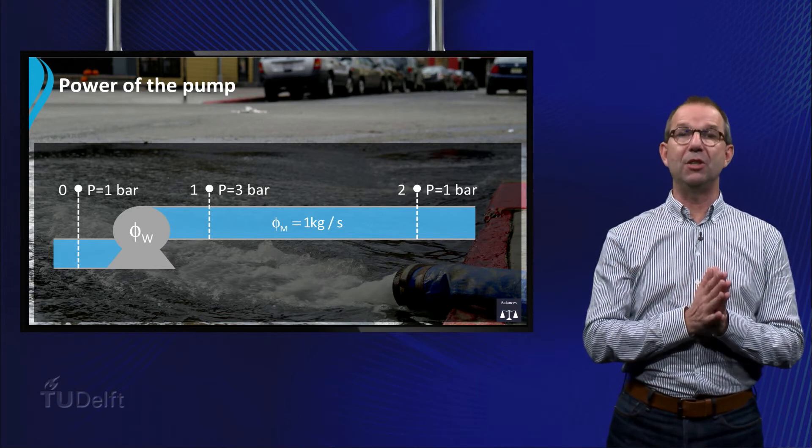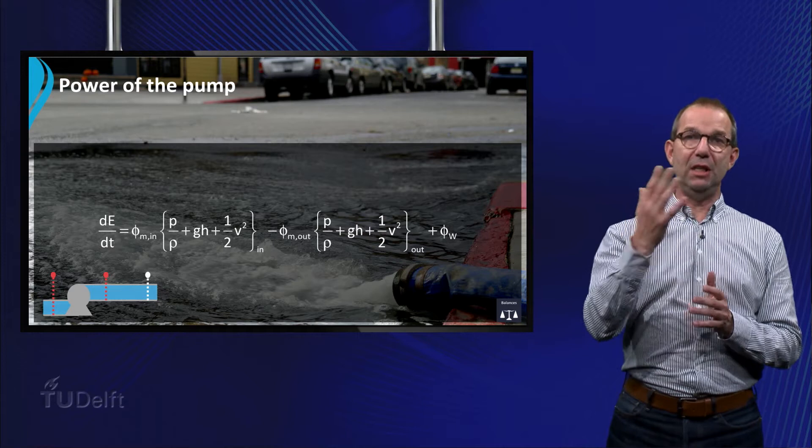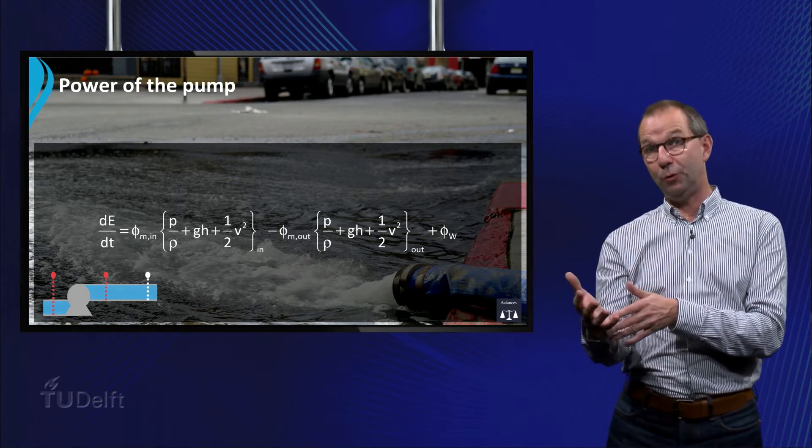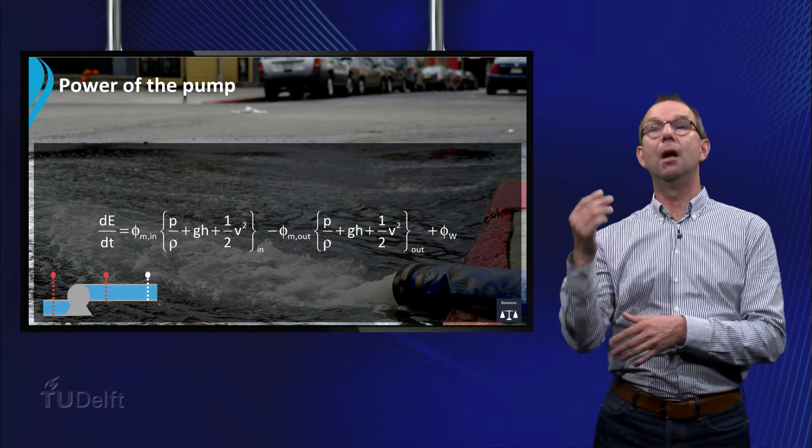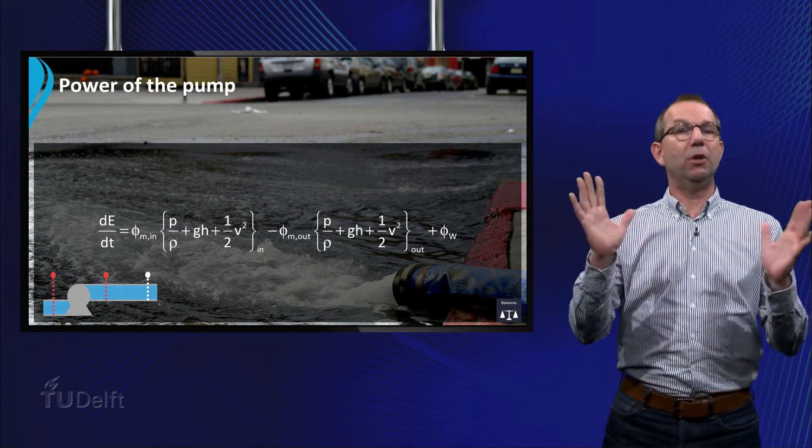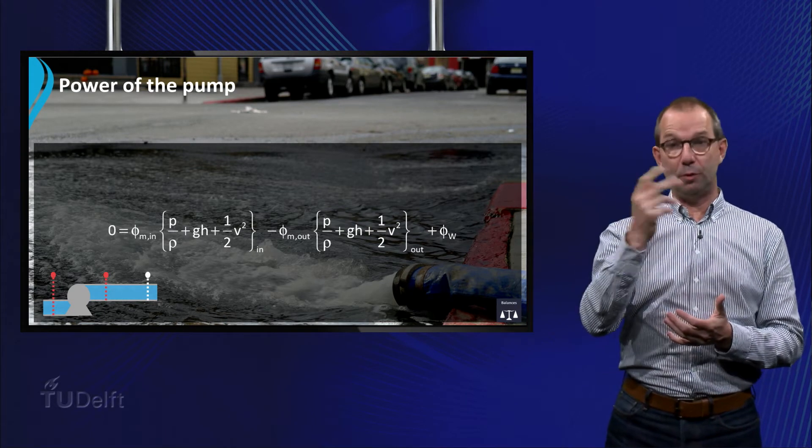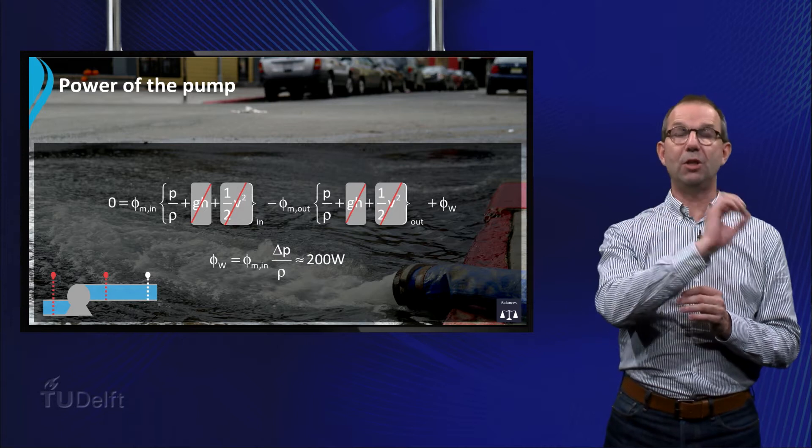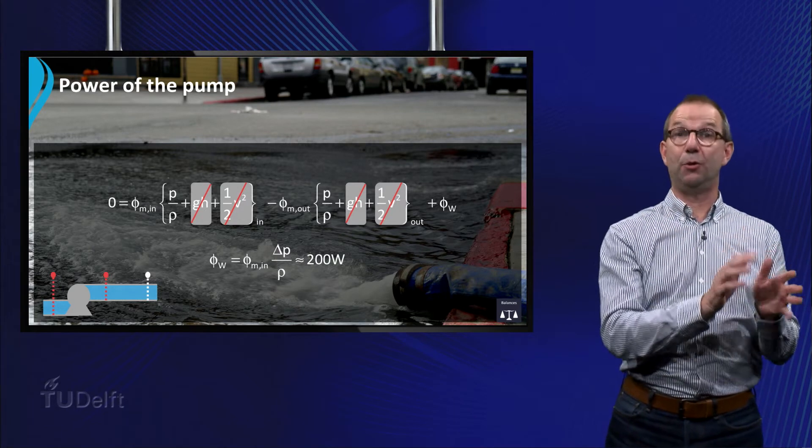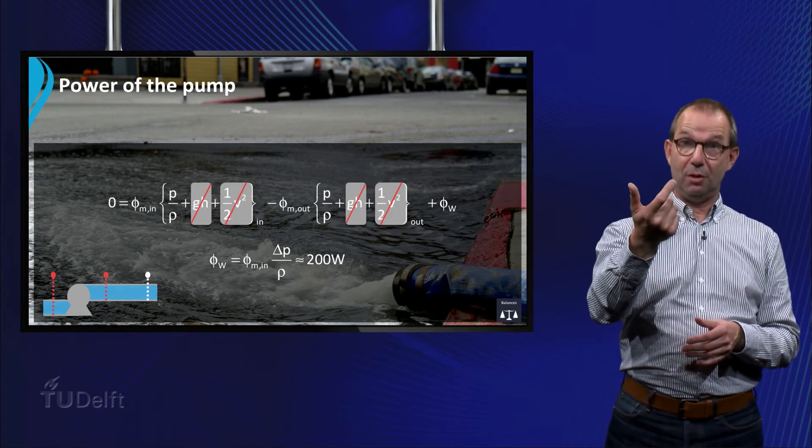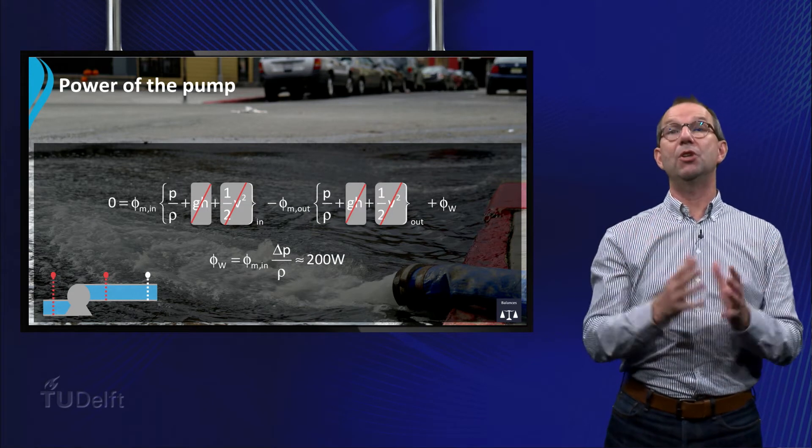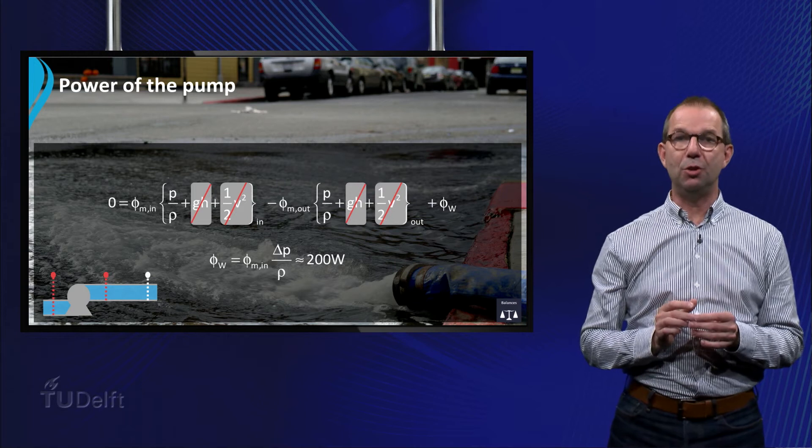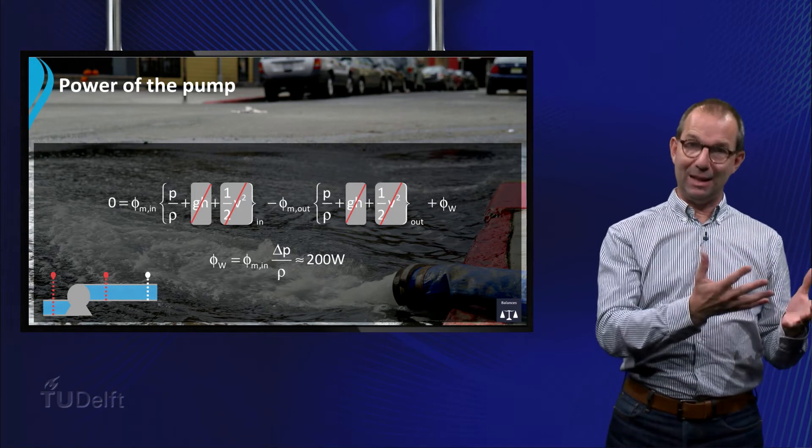dE/dt equals the inflow times mechanical energy at the entrance minus outflow times the mechanical energy at the exit plus the work done by the pump. Again we assume a steady state. We assume a horizontal system and constant velocity which leads to the work done by the pump equals the mass flow rate through the tube times the pressure difference over the pump divided by the density which is equal to about 200 watts for this pump. This illustrates how you can use the total energy and the mechanical energy balance separately.